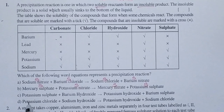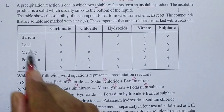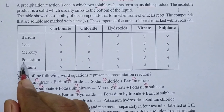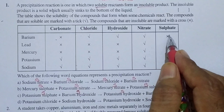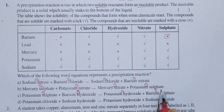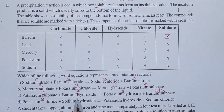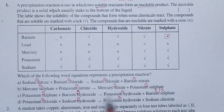Now let us see option C: potassium sulphate — soluble; barium hydroxide — soluble; potassium hydroxide — soluble; barium sulphate — cross mark, so it is insoluble (marked as 'Is'). Potassium chloride — soluble; sodium hydroxide — soluble; potassium hydroxide — soluble; sodium chloride — soluble.